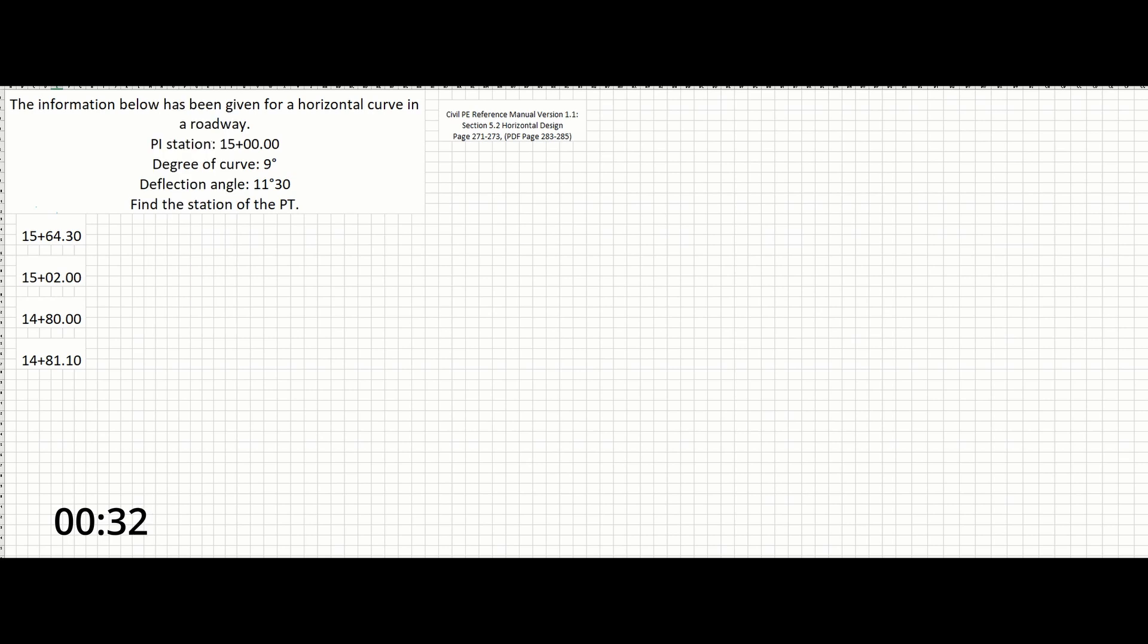So, let's spend some time defining a few things here. This station number can also be written out as 1500 feet, because stations are given in increments of 100 on this side, and the remaining numbers on the other side. The degree of curve is fine the way it is. The deflection angle, we should convert to a decimal degree, not a minute. So, the easiest way to do this is to divide this number by 60, which would give you 11.5 degrees. And I think now we're ready to solve the problem.